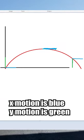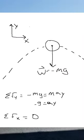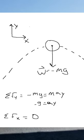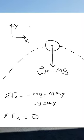If we draw this motion out, it looks like this. And if we break it up into x and y components, it looks like this. If we draw the free body diagram, we see the only force acting on it is weight. After applying Newton's second law, we learn that only gravity is acting on the ball in the y direction and nothing in the x direction.